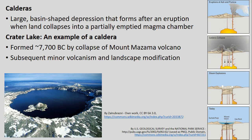Shield volcanoes are usually the largest in terms of full volume and size, but the next largest are calderas — large basin-shaped depressions that form based on a large eruption that collapses part of the volcano. It essentially emits so much magma that it empties the magma chamber underground; the overlying weight can't be supported anymore and it collapses in on itself. Crater Lake is actually a great example of this — another Oregon example — formed several thousand years ago by the collapse of Mount Mazama with a big eruption.